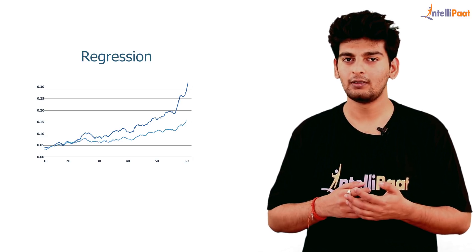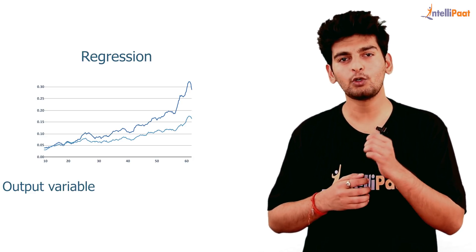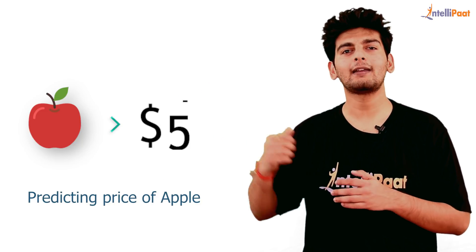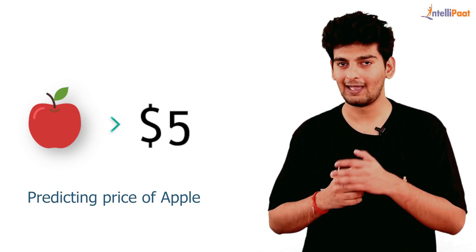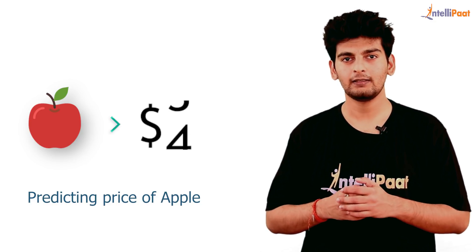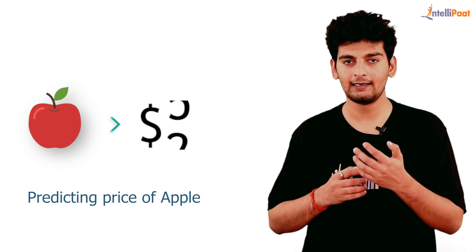So next we have regression. So in regression, the output variable is a continuous numerical. So let's take this example. So over here we are trying to predict the prices of Apple, which is basically a continuous numerical. So guys, this is how supervised learning algorithms work.